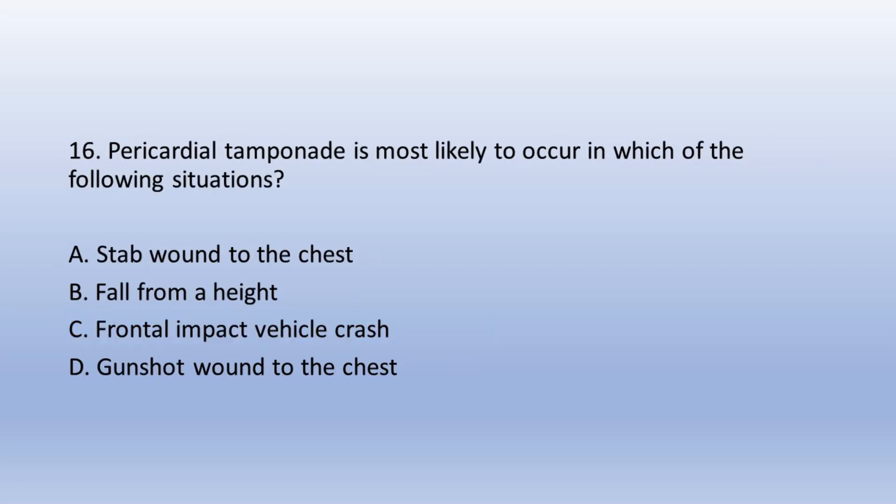Question 16. Pericardial tamponade is most likely to occur in which of the following situations? A. A stab wound to the chest, B. Fall from a height, C. Frontal impact vehicle crash, D. Gunshot wound to the chest. The answer is A. A stab wound to the chest.